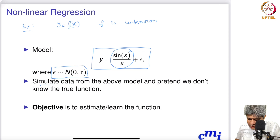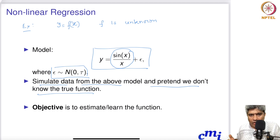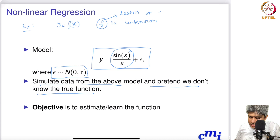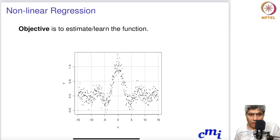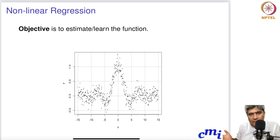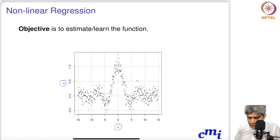What we are going to do is simulate some data from the above model and pretend that we don't know the true function. Obviously our target is to learn or estimate the unknown function f. If we simulate from this function and pretend as if we don't know the true relationship between x and y, then what we have is only the data — the x and the y — and if we plot them, this is the kind of data that you are seeing.